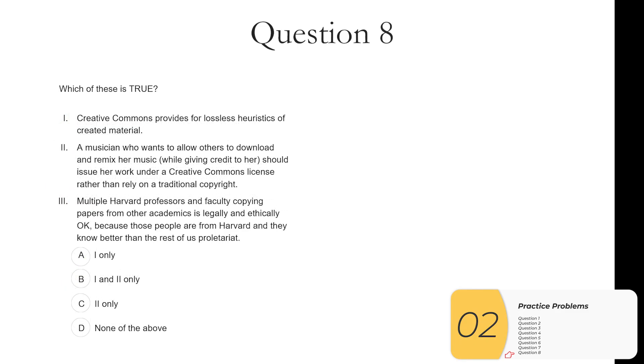Question eight. Which of these is true? One. Creative Commons provides for lossless heuristics of creative material. So that's clearly just a bunch of nonsense mumbo-jumbo that is related to AP CSP, but not this question. So that one is wrong.